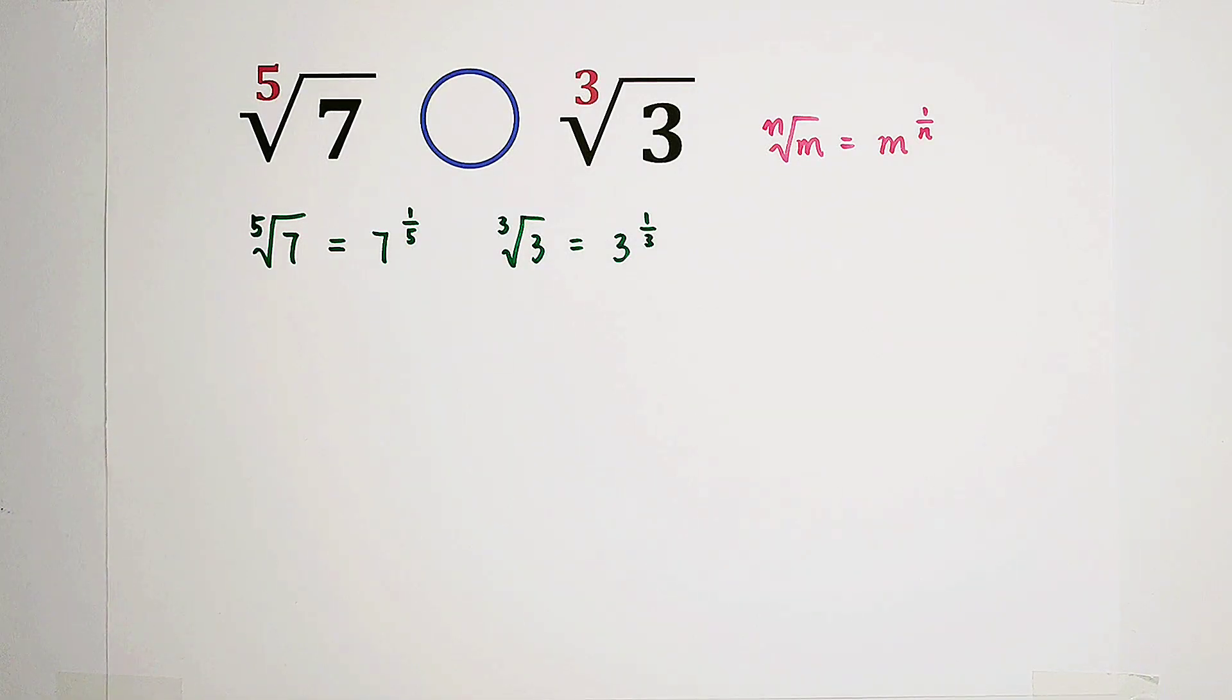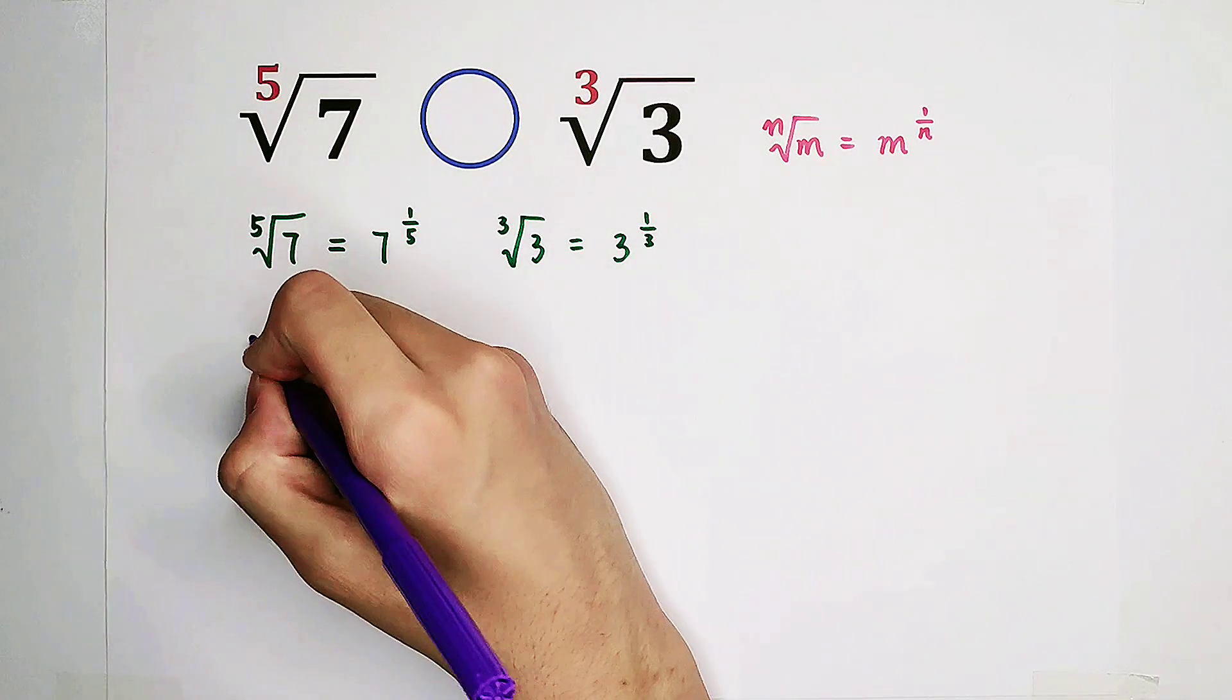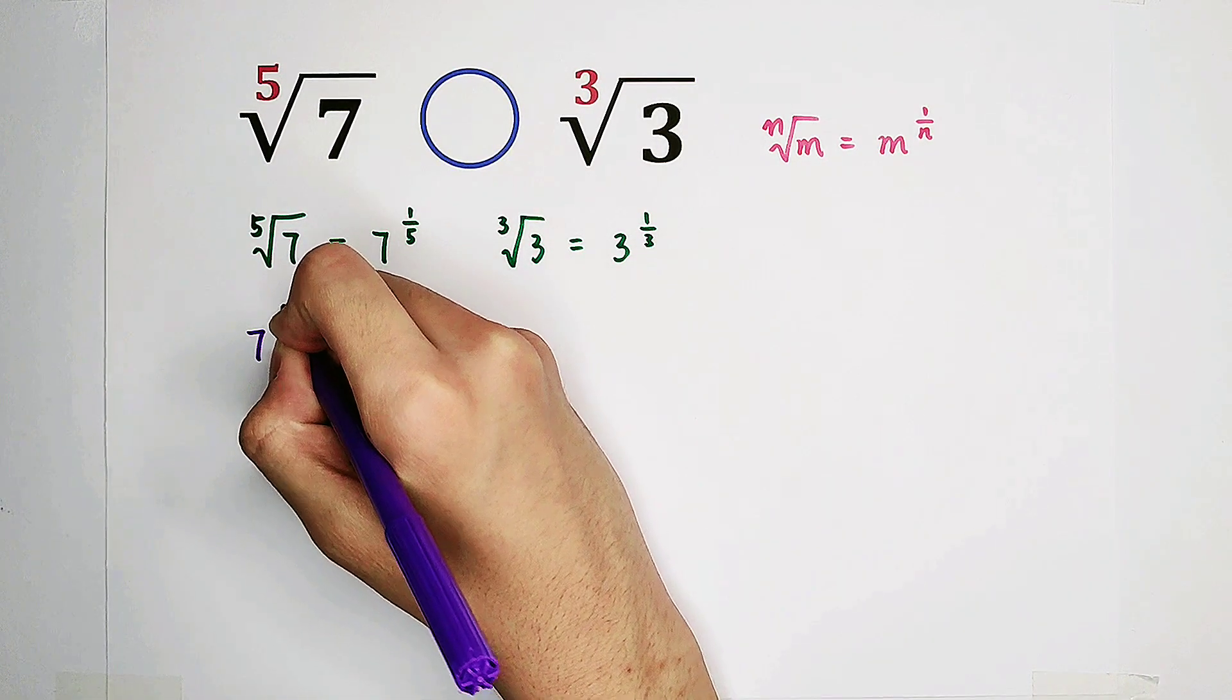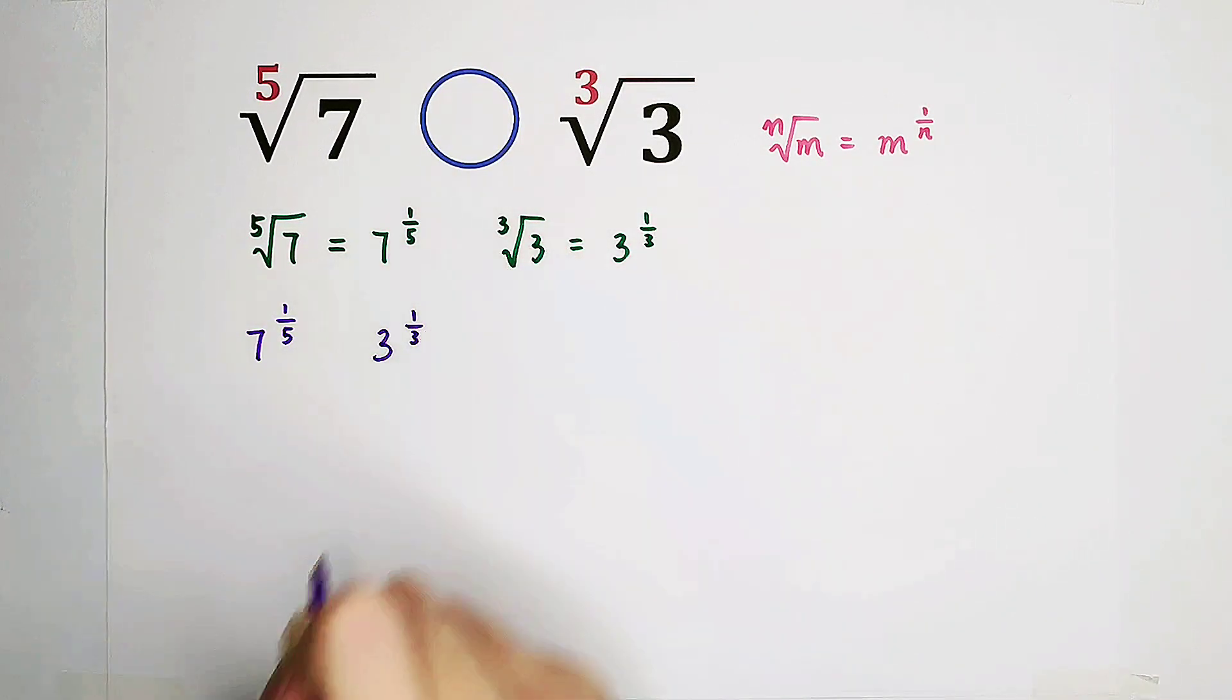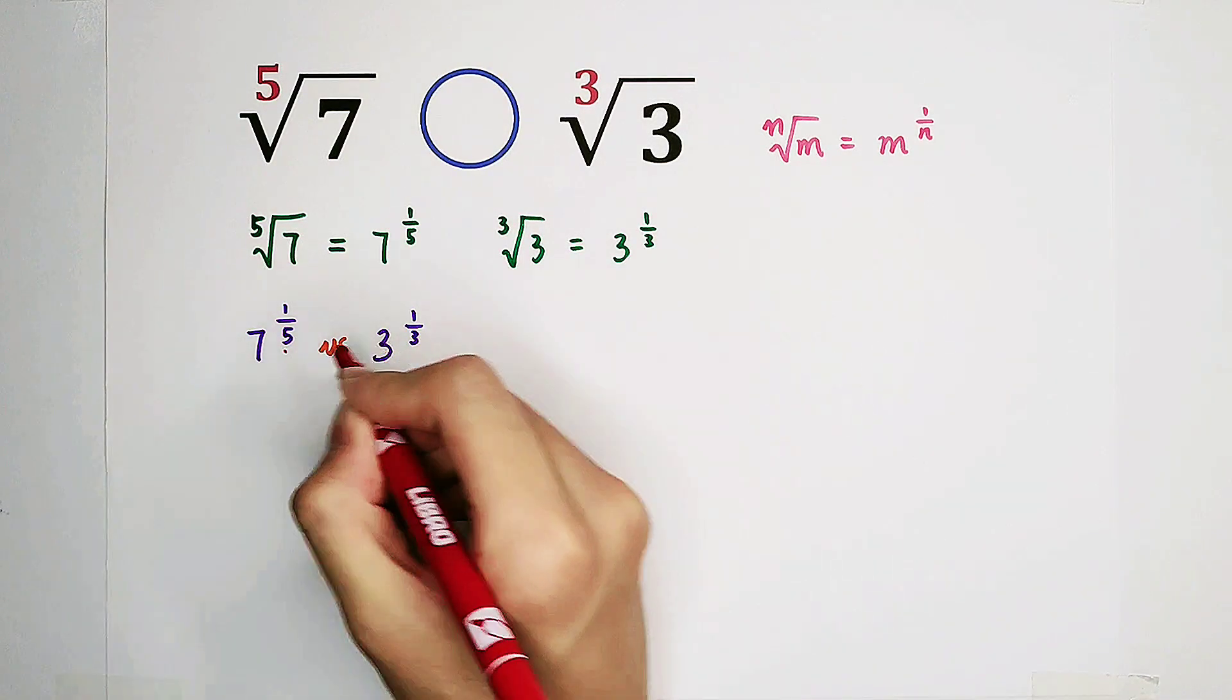Now what we're going to do is to compare these two numbers. 7 to the power of 1 fifth or 3 to the power of 1 third. Which one is greater? However, we dislike the exponents.